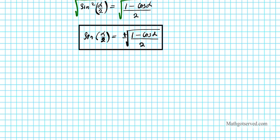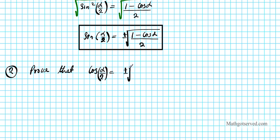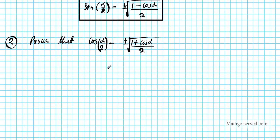Now let's move on to Part 2. We are going to prove that cosine of alpha over 2 equals plus or minus the square root of 1 plus cosine alpha, divided by 2. We are going to use one of the five double angle identities; the one we'll use in this case is cosine 2θ equals 2 cosine squared θ minus 1.